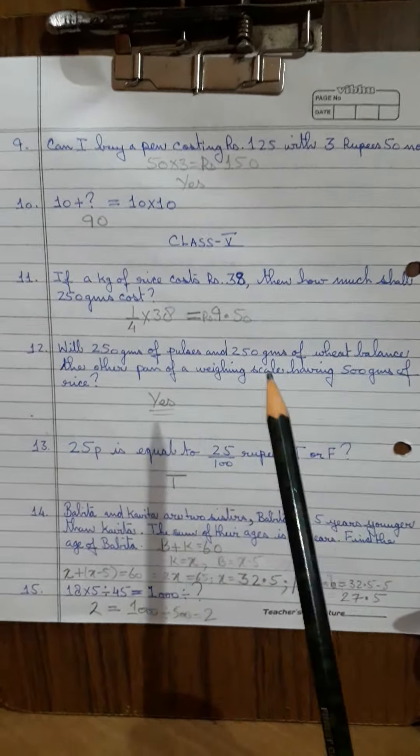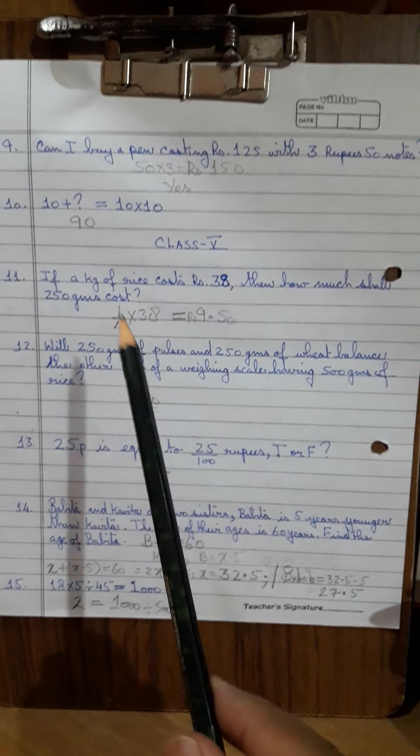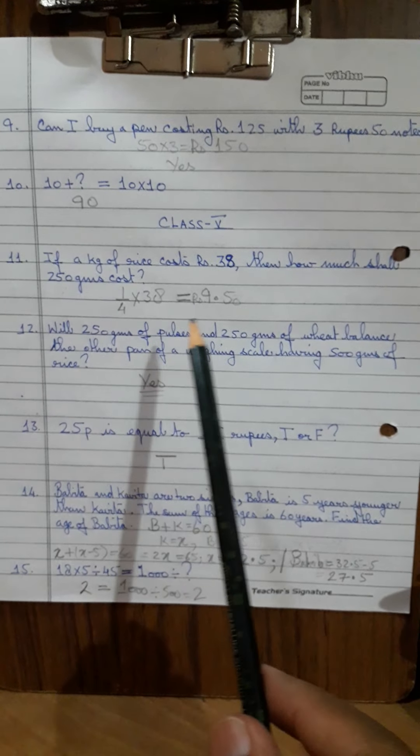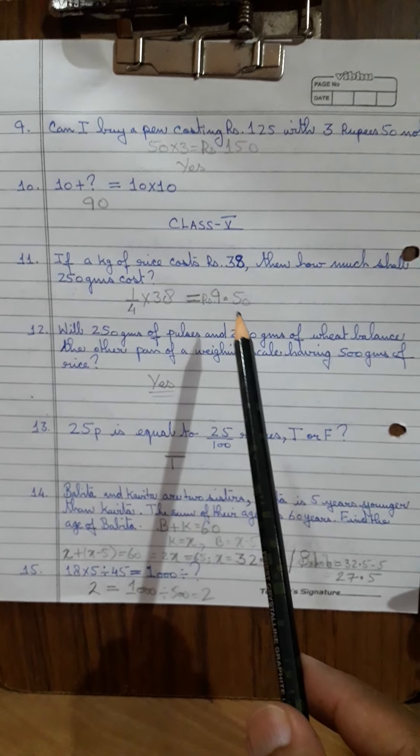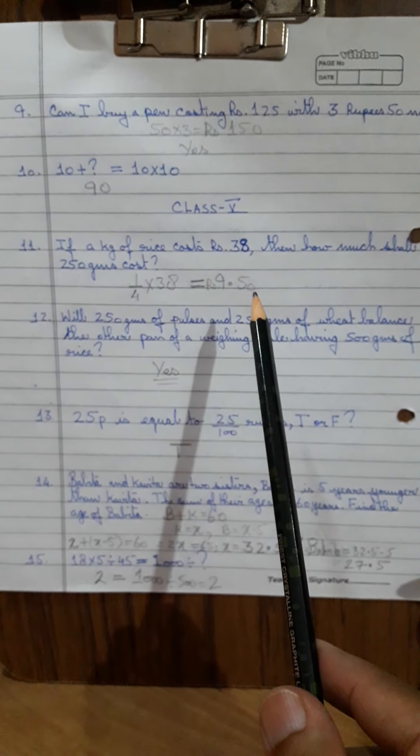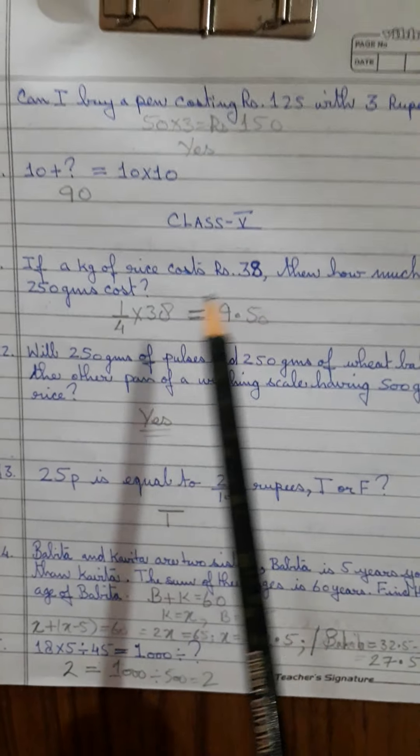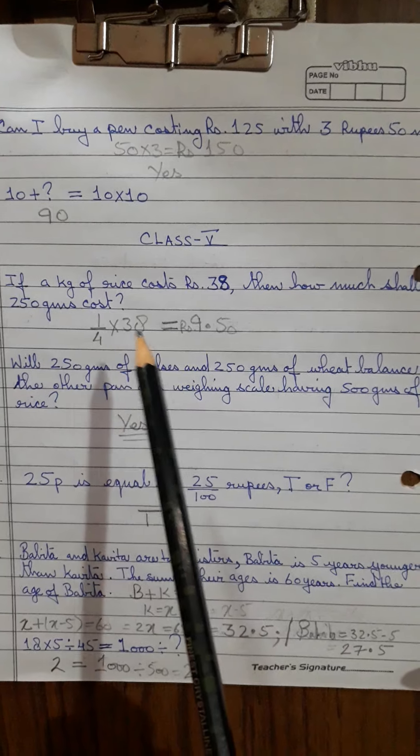Now, coming to class 5. If a kg of rice costs rupees 38, how much shall 250 grams cost? So, 250 grams means one-fourth. So one-fourth of 38 is rupees 9.50, 9 rupees 50 paisa. Yes or no?